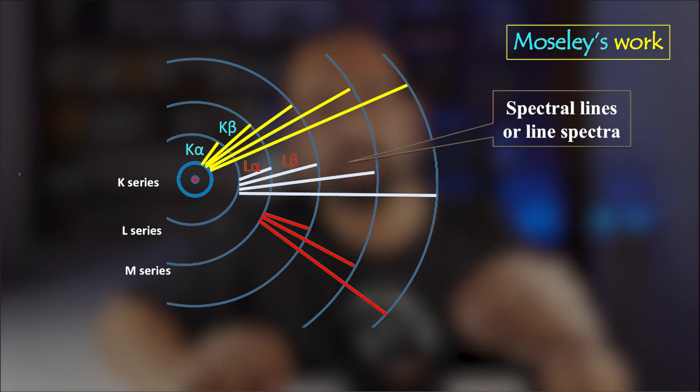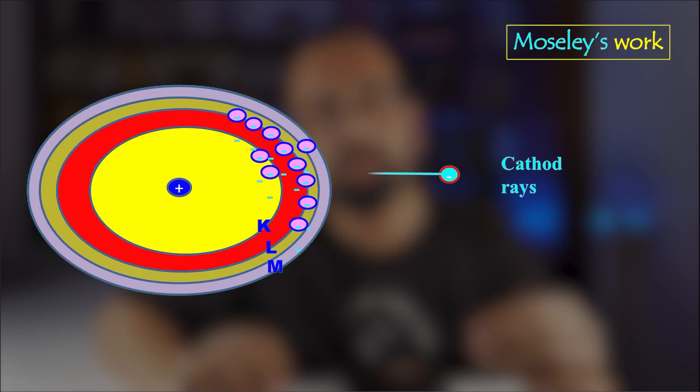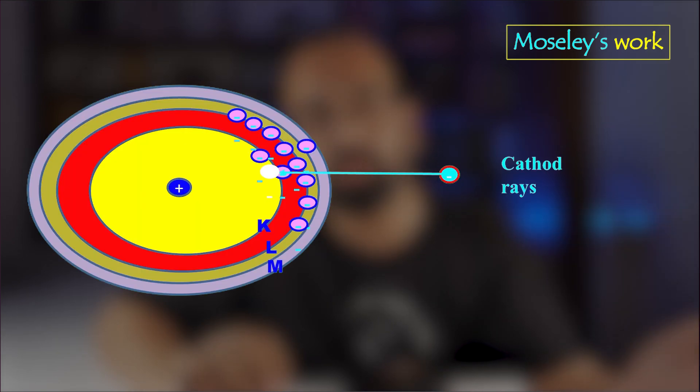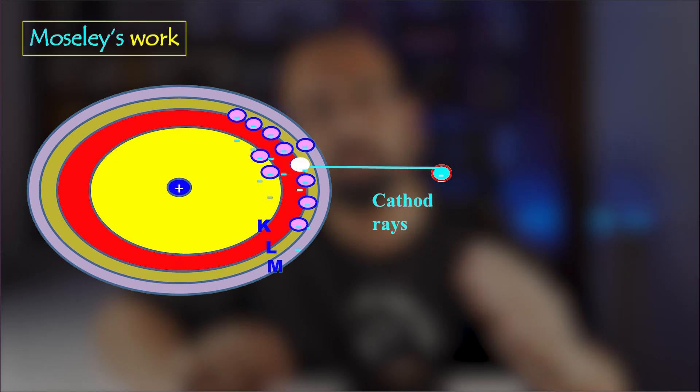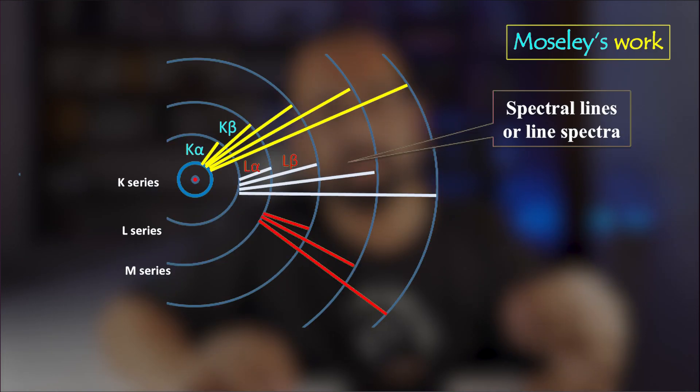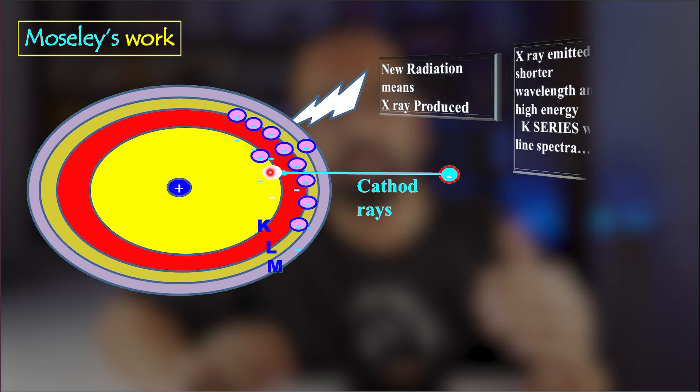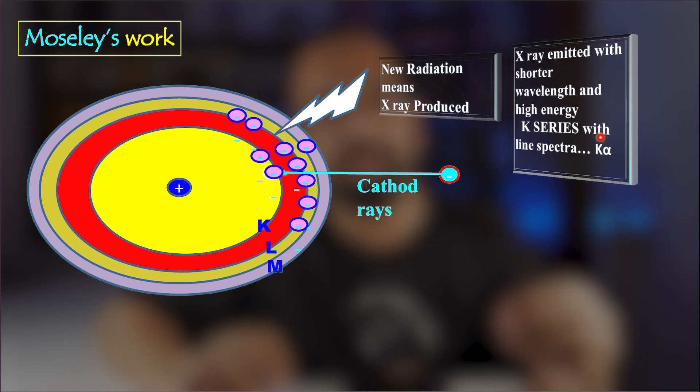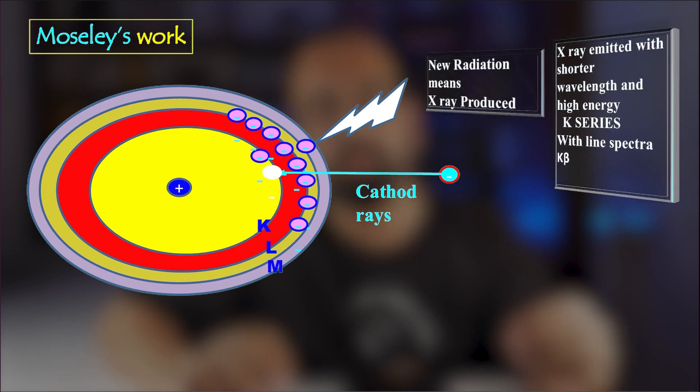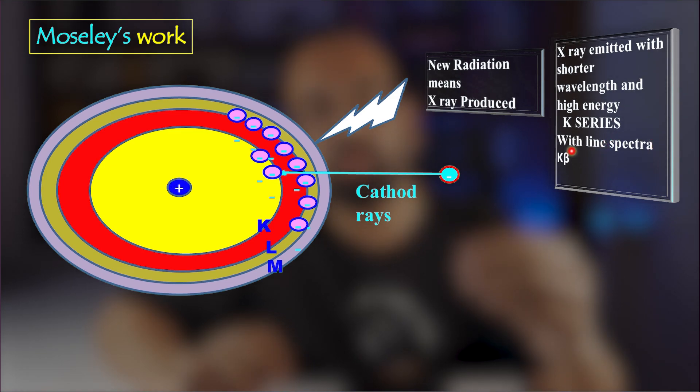In that line spectrum of the X-rays, there are different series of spectral lines present like K series. The K series is most energetic series and that is produced when the electrons from the K shell is knocked out. L series is produced when the electron from the L shell is knocked out. X-ray series like K series and L series consist of individual lines like K alpha, K beta, L alpha, L beta, etc. The K alpha lines are produced when the electrons from L shell move to fill the vacancy in the K shell. The K beta lines are produced when the electrons from the M shell falls back to the K shell to fill the vacancy. All these individual lines belong to K series.